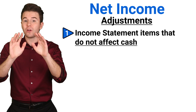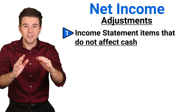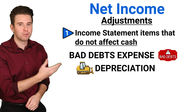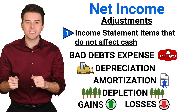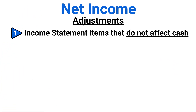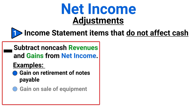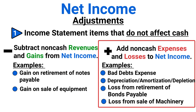The first set of adjustments is for income statement items that don't affect cash. These include things like bad debts expense, depreciation, amortization, depletion, and gains or losses from the sale of assets and retirement of debt. For this section, we have two general rules: first, that we subtract revenues and gains from net income when they don't include cash inflows; and two, that we add expenses and losses back into net income when they don't include cash outflows.